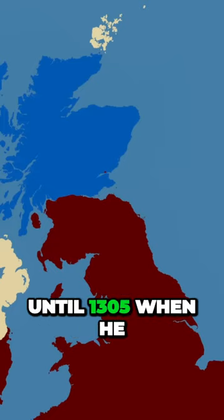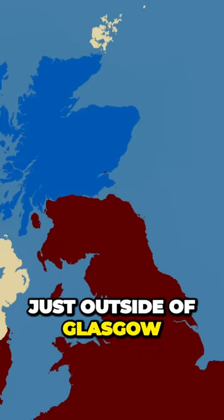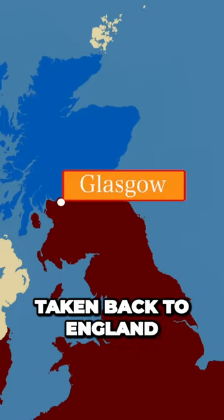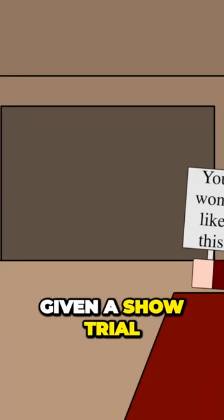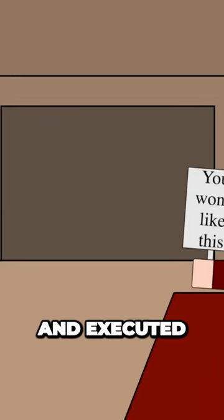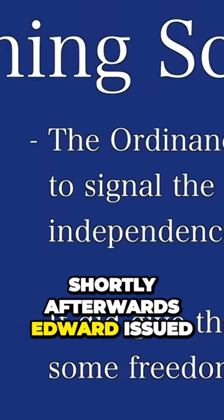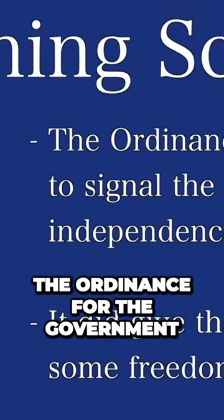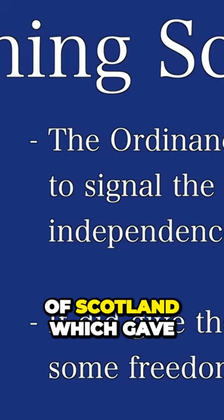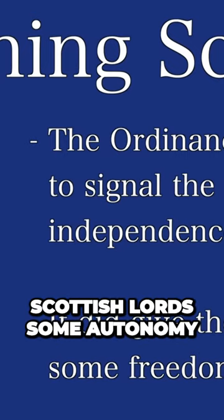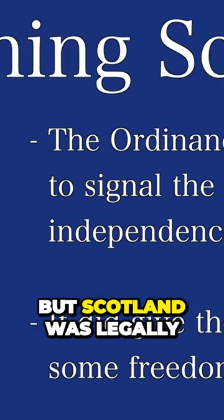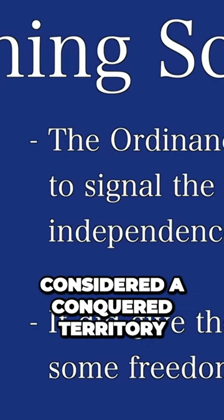This harassment continued until 1305, when he was captured just outside of Glasgow, taken back to England, given a show trial and executed. Shortly afterwards, Edward issued the Ordinance for the Government of Scotland, which gave Scottish lords some autonomy, but Scotland was legally considered a conquered territory.